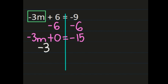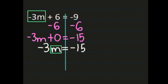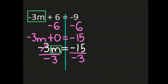Now I can simplify: negative 3m plus 0 is simply negative 3m equals negative 15. Now I have a one-step equation: negative 3m equals negative 15, so it's time to isolate my variable. I had negative 3 times m, so the inverse operation is to divide by negative 3. If I divide the left by negative 3, I need to divide the right by negative 3 as well. The negative 3s simplify out, and a negative divided by a negative is a positive, leaving positive m equals. On the right, negative divided by negative is positive, and 15 divided by 3 is 5.